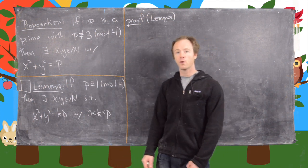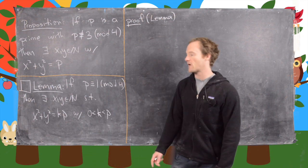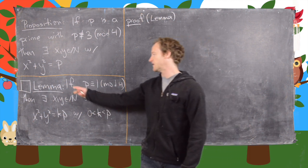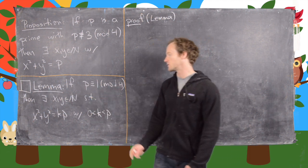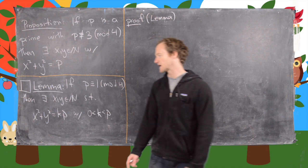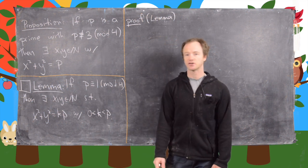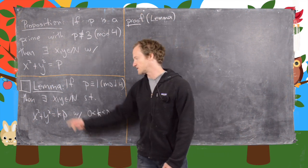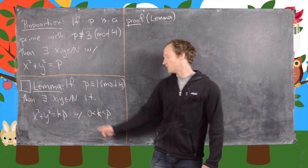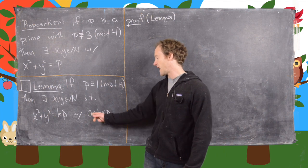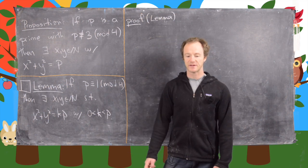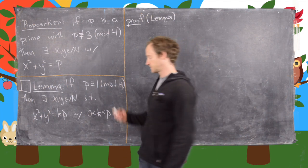Before we do that we need to prove the following lemma, which says that if p is congruent to 1 mod 4, then there exist x and y in the natural numbers such that x squared plus y squared equals kp for some k between 0 and p. So let's do the proof of this lemma first.